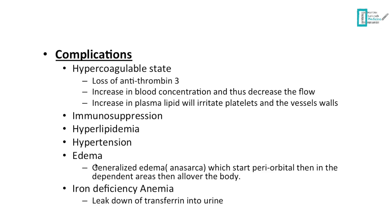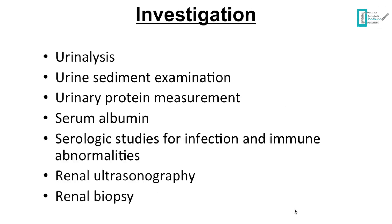Edema usually starts periorbital because of the loose connective tissue around the eyes, then develops in the dependent area. If the patient is walking a lot, fluid accumulates in the lower limbs; if the patient is bedridden, fluid accumulates in the sacral area, and then it spreads all over the body. Another complication is anemia from iron deficiency, because transferrin — the protein responsible for carrying iron in the blood — is lost in the urine, and when transferrin is lost, iron is lost as well.